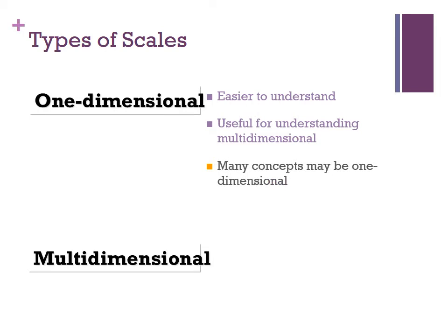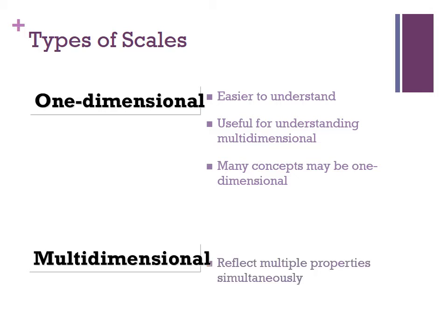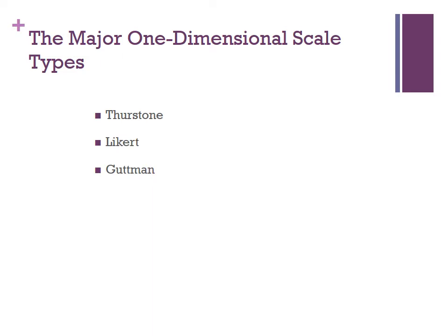One-dimensional scales are also popular because many items are inherently one-dimensional. Multidimensional scales reflect multiple properties, and for this course it's beyond the scope of an introductory research methods class. But there are many different types of one-dimensional scaling methods: Thurstone scaling, Likert scaling, and Guttman scaling.